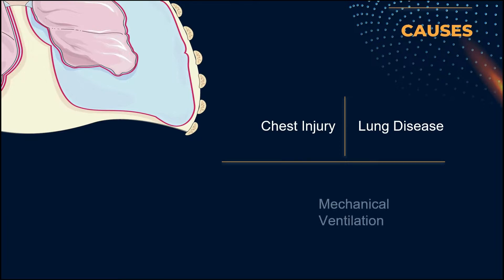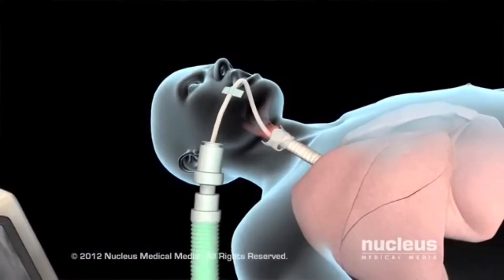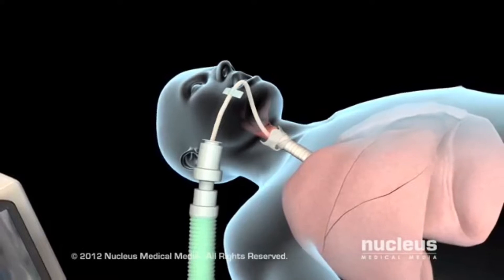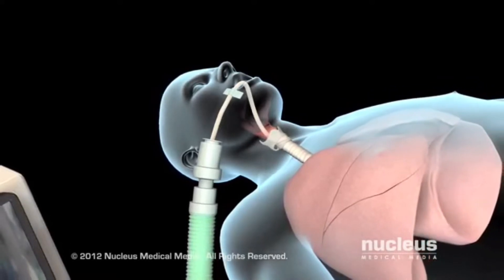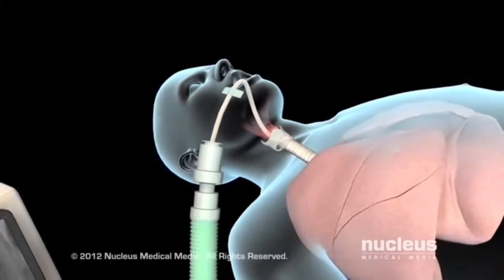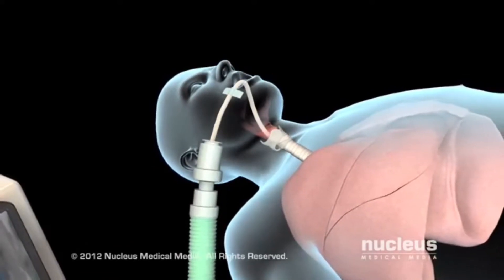Mechanical ventilation — tension pneumothorax most commonly develops in patients receiving positive pressure mechanical ventilation. A severe type of pneumothorax can occur in people who need mechanical assistance to breathe. The ventilator can create an imbalance of air pressure within the chest, making the lung collapse completely.